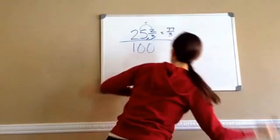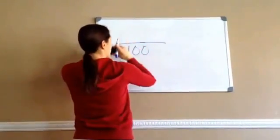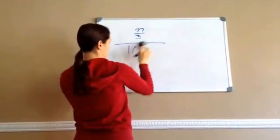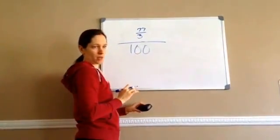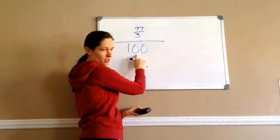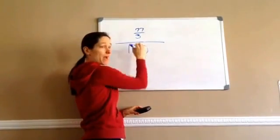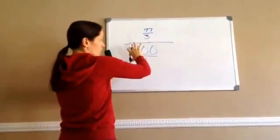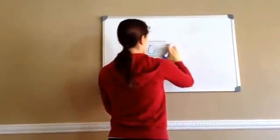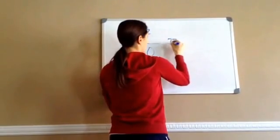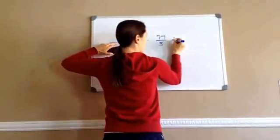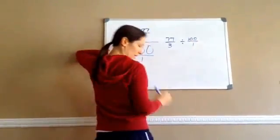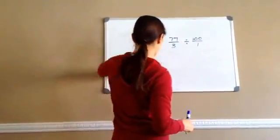Now I'm going to erase this and pretend like it just says 77 over 3 divided by 100. Now, this one does not have a fraction, but can I make this into a fraction easily? Any whole number can be made into a fraction by putting it over 1. Do you remember that rule? So now we take this and write it in a different form. So let's do that. 77 over 3, and this divided by bar I'm going to make into a divided by sign, 100 over 1. And then I can erase this whole thing that looks like E.